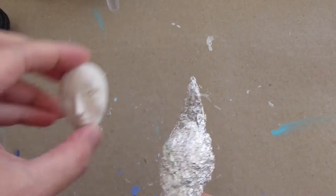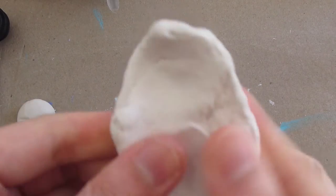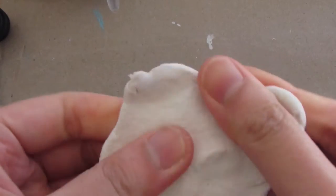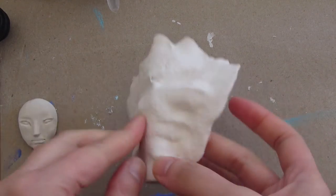For the armature, I use aluminum foil that I just rolled up. It just makes the piece a lot lighter, and you don't have to use a lot of clay as well.